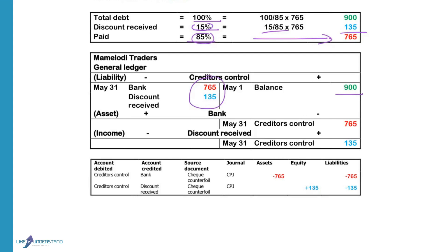The bank account is credited to decrease the amount paid. Discount received is credited because income increases on the credit side. Creditors control is debited because liabilities decrease on the debit side. Bank is credited because assets decrease on the credit side and we have less money in the bank. The source document is a cheque counterfoil and we will record this in the cash payments journal.